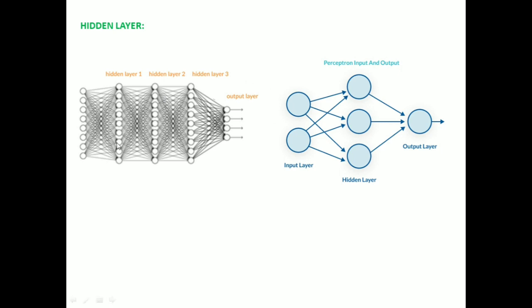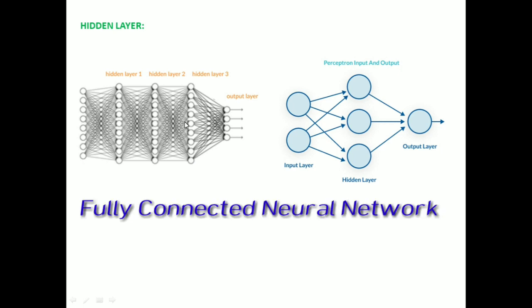There is no fixed rule that a deep neural network must have a specific number of hidden layers, or that each hidden layer must have a specific number of neurons. By practice, we determine how many hidden layers and how many nodes per hidden layer are required. If all nodes in the network are connected to all other nodes in the next layer, it is called a fully connected neural network.